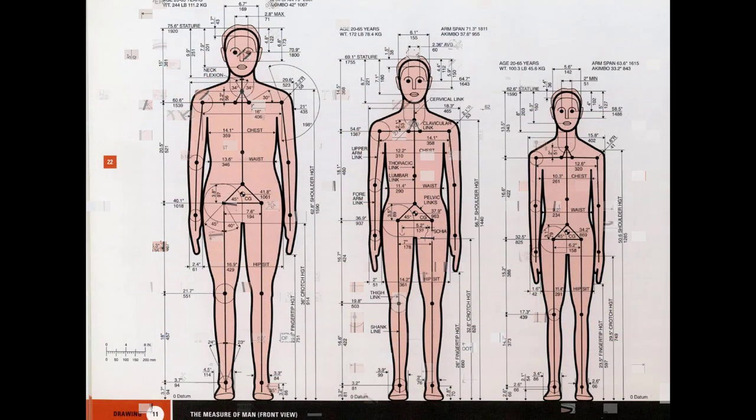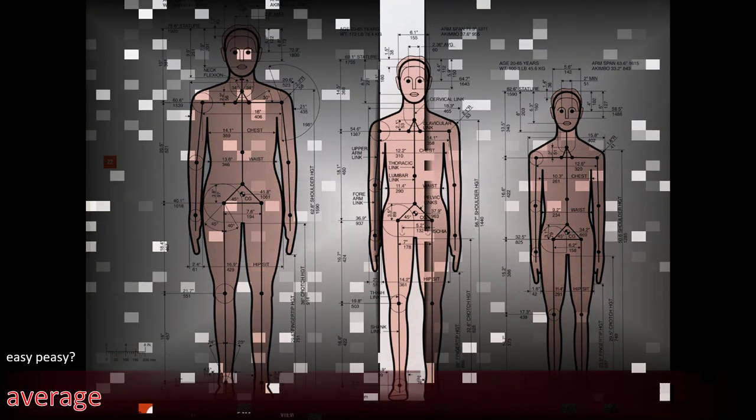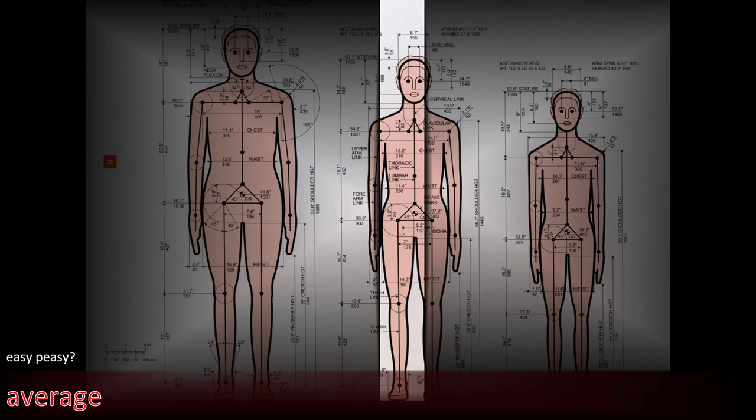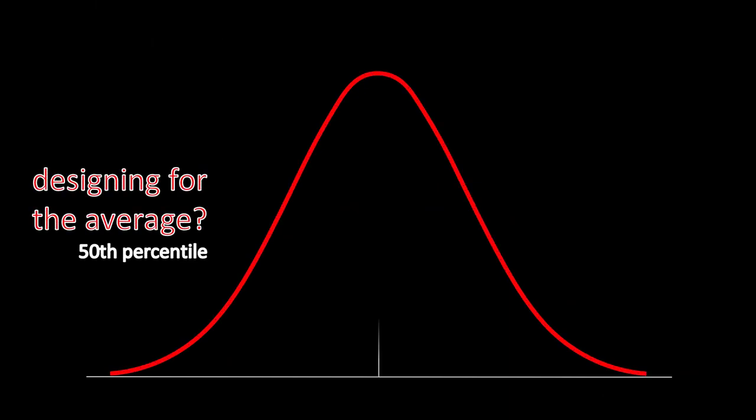We're going to have a look at if you were to design just for this 50th percentile, it would be quite easy, like us designing for ourselves. We really only have one set of data to consider. So if we're saying we're designing for the average or the 50th percentile, what does that mean? What does it mean to be normal?